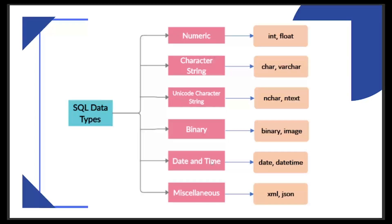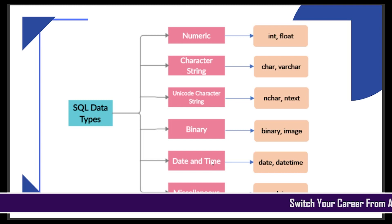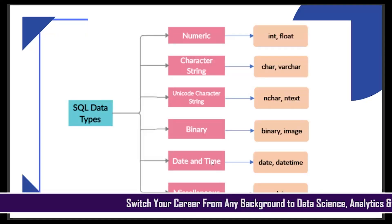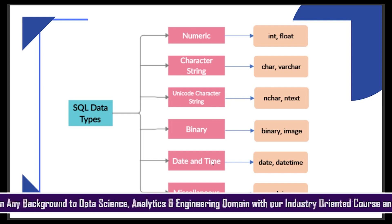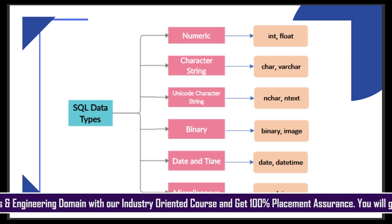But if you store data using the varchar data type and you have considered the limit as 10, then the length could be anything from 1 to 10. You can use variable length — that is the varchar data type. Then you have the unicode character string, which is nchar and ntext, used for a big amount of text data. Then you have binary, date and time, and miscellaneous, where XML and JSON data types are also available in SQL.